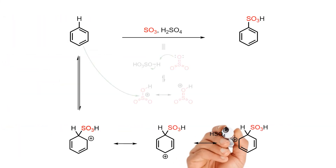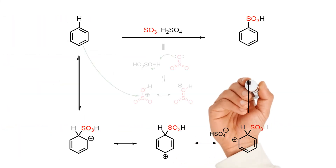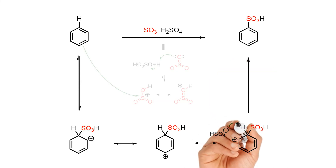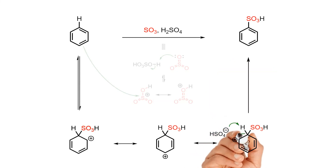Since the system ultimately wants to get back to being aromatic, deprotonation of the sigma complex occurs to regenerate the 6π system in the aromatic product.